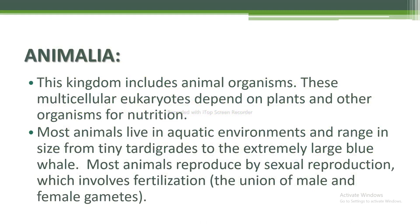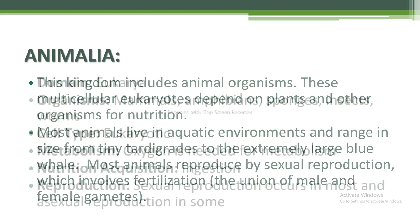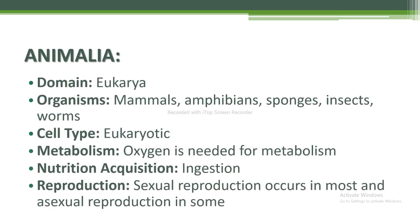Next I am going to discuss Animalia. This kingdom includes animal organisms — multicellular eukaryotes dependent on plants and other organisms for nutrition. Most animals live in aquatic environments and range in size from tiny tardigrades to the extremely large blue whale. Most animals reproduce by sexual reproduction, which involves fertilization — the union of male and female gametes. Domain is Eukarya. Organisms include mammals, amphibians, sponges, insects, and worms.